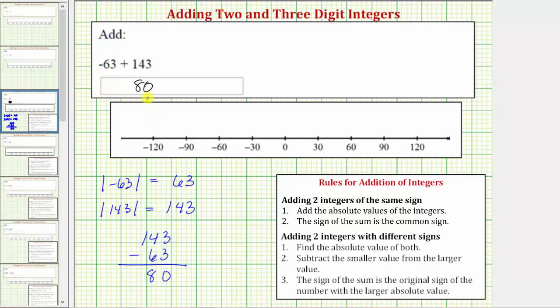Before we go, let's also look at this sum using the number line. For negative 63, we would start at zero and move left 63 units on the number line to negative 63.